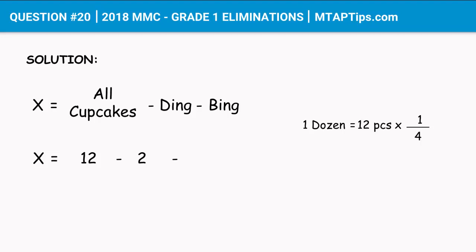One dozen is equal to 12 pieces, times one-fourth, because Bing only got one-fourth of a dozen. To compute this, we multiply the whole number 12 by the numerator: 12 times 1 equals 12, divided by the denominator 4. So 12 divided by 4 gives us 3. Going back to the equation, X is equal to 12 minus 2, then minus 3.